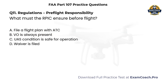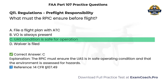Regulations. Pre-flight responsibility. What must the remote pilot in command ensure before flight? A. File a flight plan with ATC. B. A visual observer is always present. C. UAS condition is safe for operation. D. Waiver is filed. Correct answer: C. The remote pilot in command must ensure the UAS is in safe operating condition and that the environment is assessed for hazards.